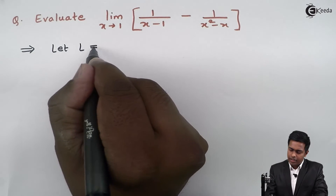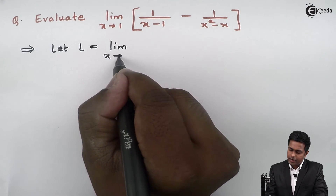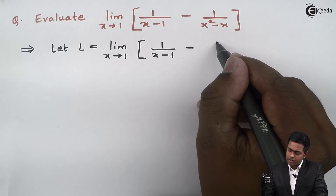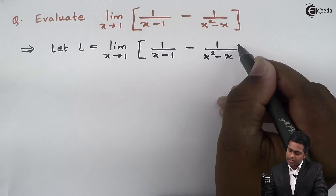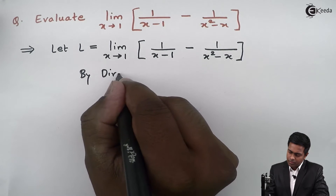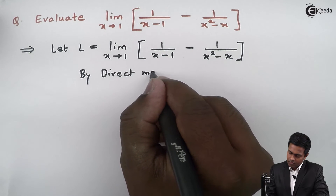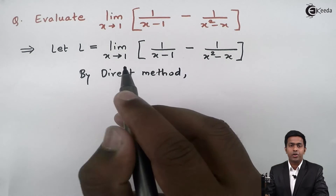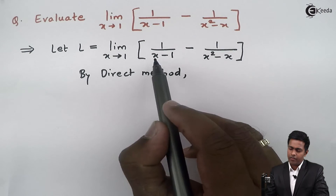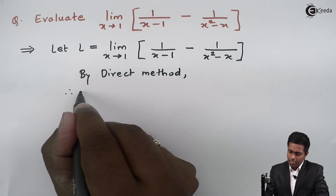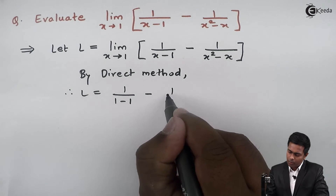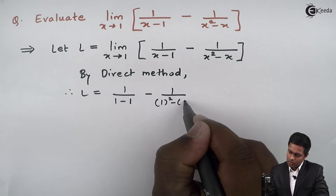First of all I will assume this given limit as L. So let L equal the limit as x tends to 1 of 1 upon x minus 1, minus 1 upon x squared minus x. By direct method, we substitute x equals 1 directly into the function, so this becomes L equals 1 upon 1 minus 1, minus 1 upon 1 squared minus 1.